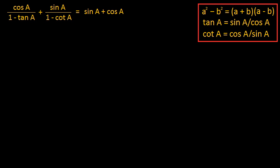Here we have one more problem proving equalities based on trigonometry. The formulas we are going to use are here in the red rectangle. The equality we need to prove is: cos A divided by 1 minus tan A, plus sin A divided by 1 minus cot A, is equal to sin A plus cos A. Since the right-hand side is in sin and cos, we will convert tan and cot in terms of sin and cos.